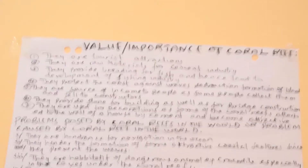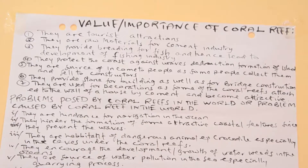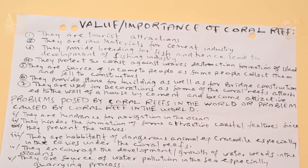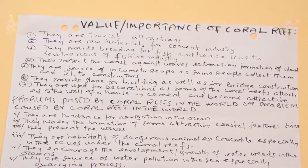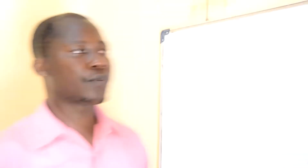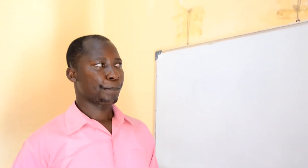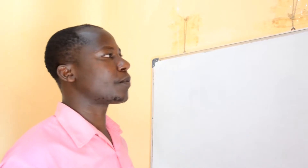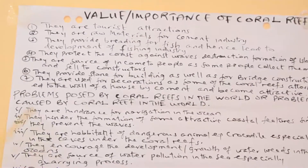Another importance is that coral reefs are a source of income to people, as some people sell them to contractors. Most of these materials — there are people engaging in economic activities whereby they collect this material and sell it to those who want it, especially contractors of different buildings. Not only that, but coral reefs are also essential because they provide stone for building as well as for bridge construction.